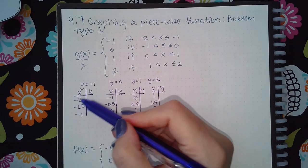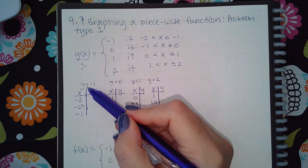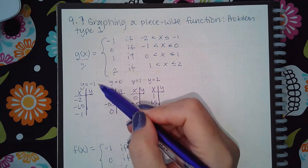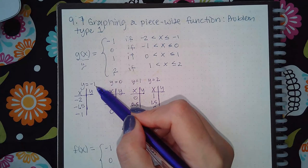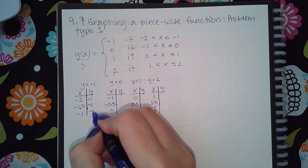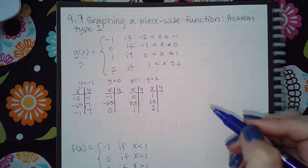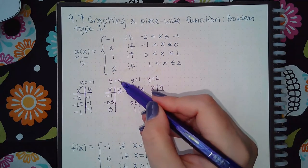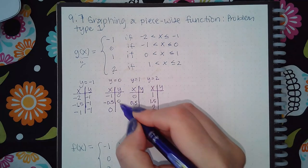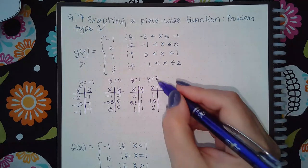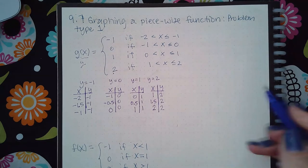Then I would plug these x values into the equation, but since there's nowhere to plug x in and it's telling me y equals negative 1, the y value is negative 1 no matter what x is. So all three x values have the same y value. Similarly for the other sections: y equals 0, 1, and 2 respectively, no matter what x is.